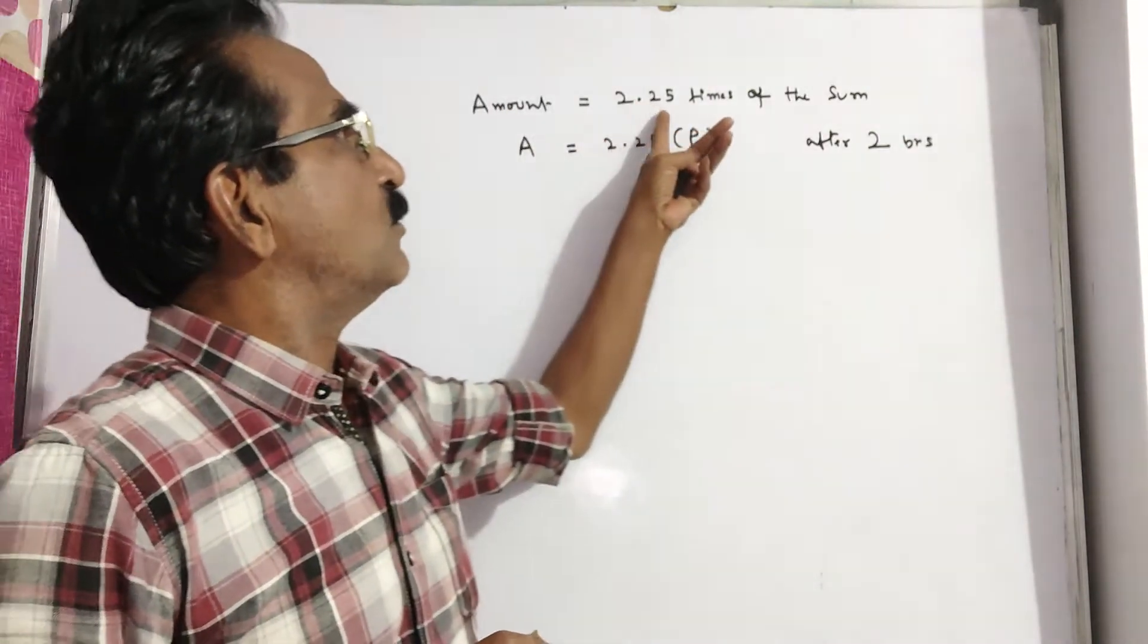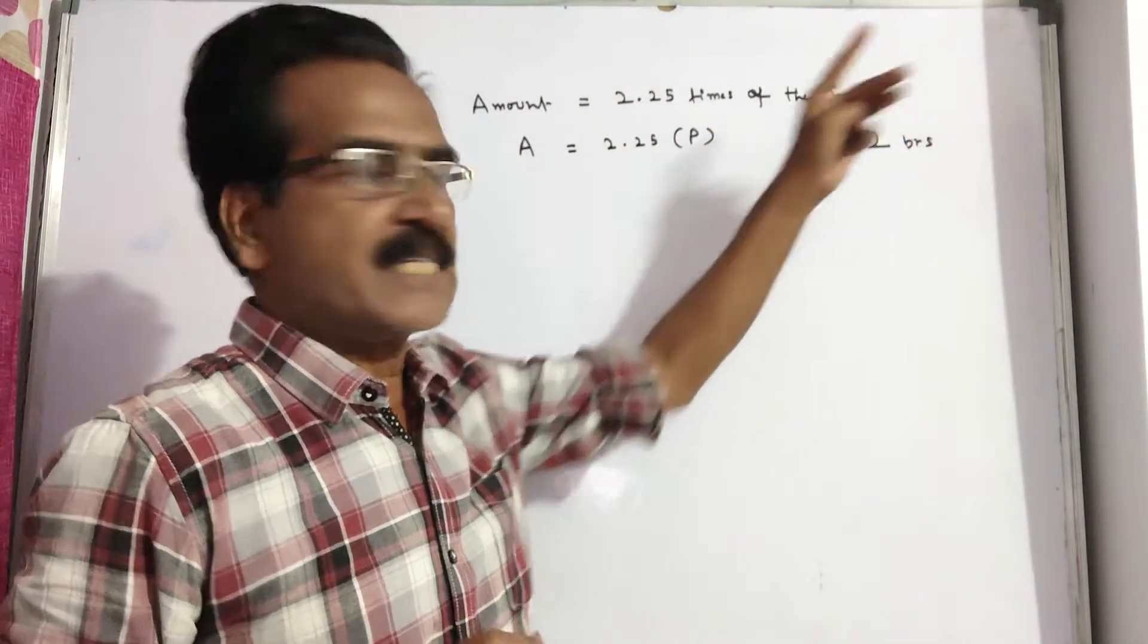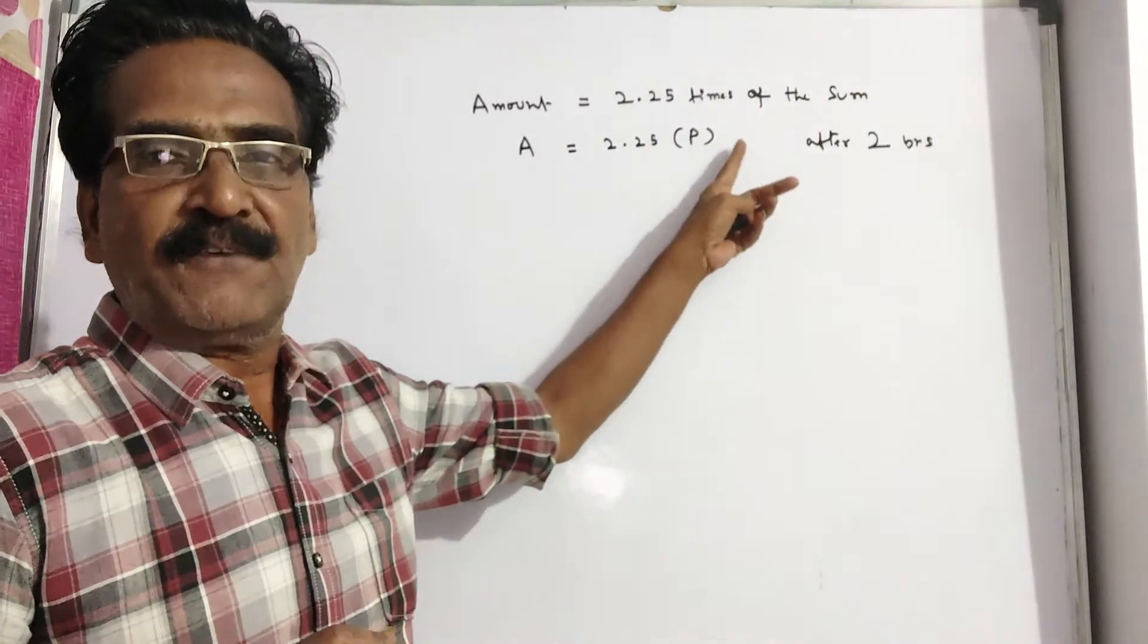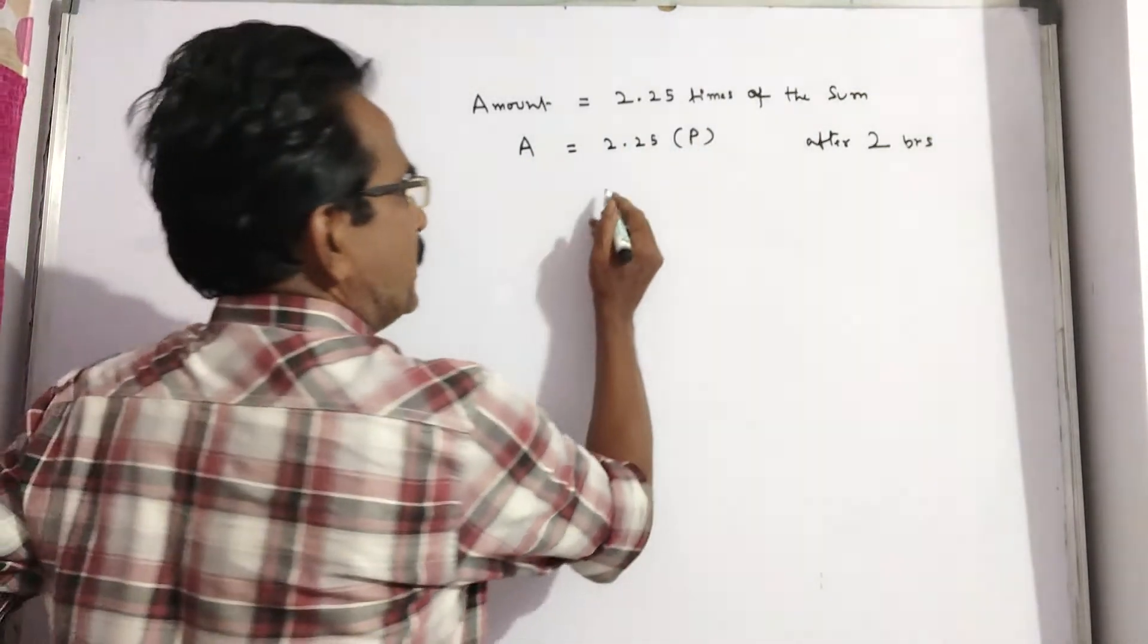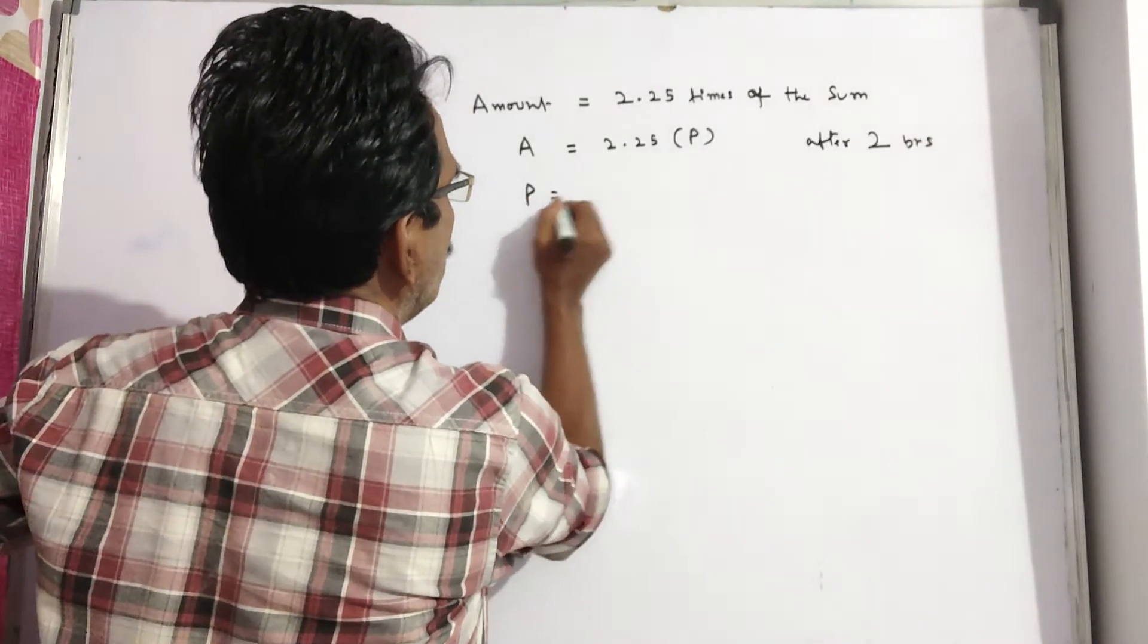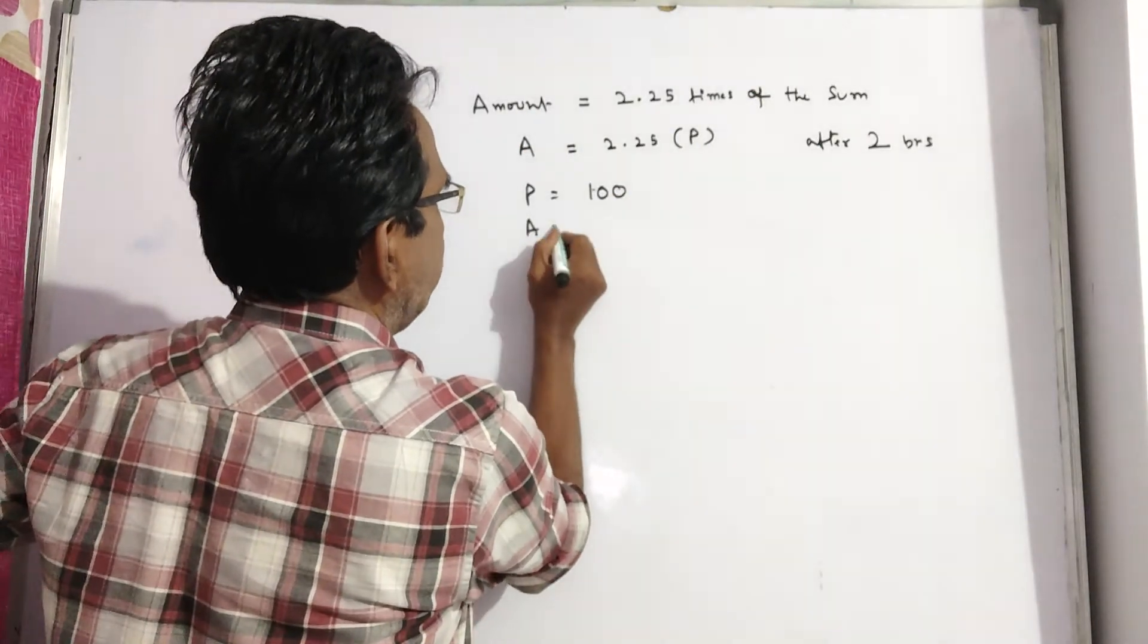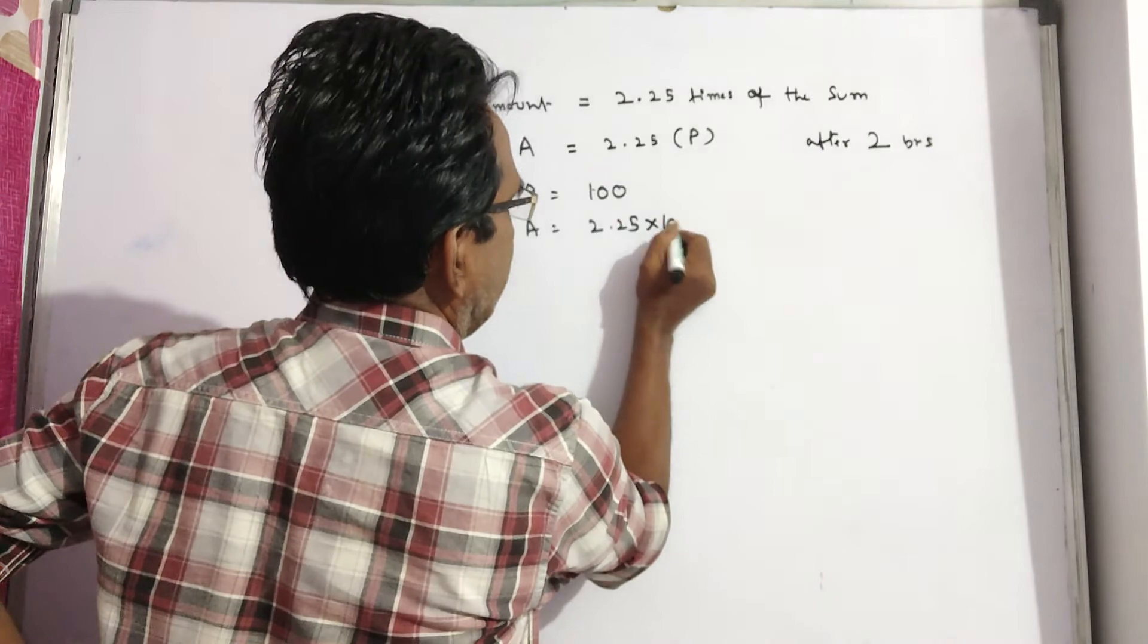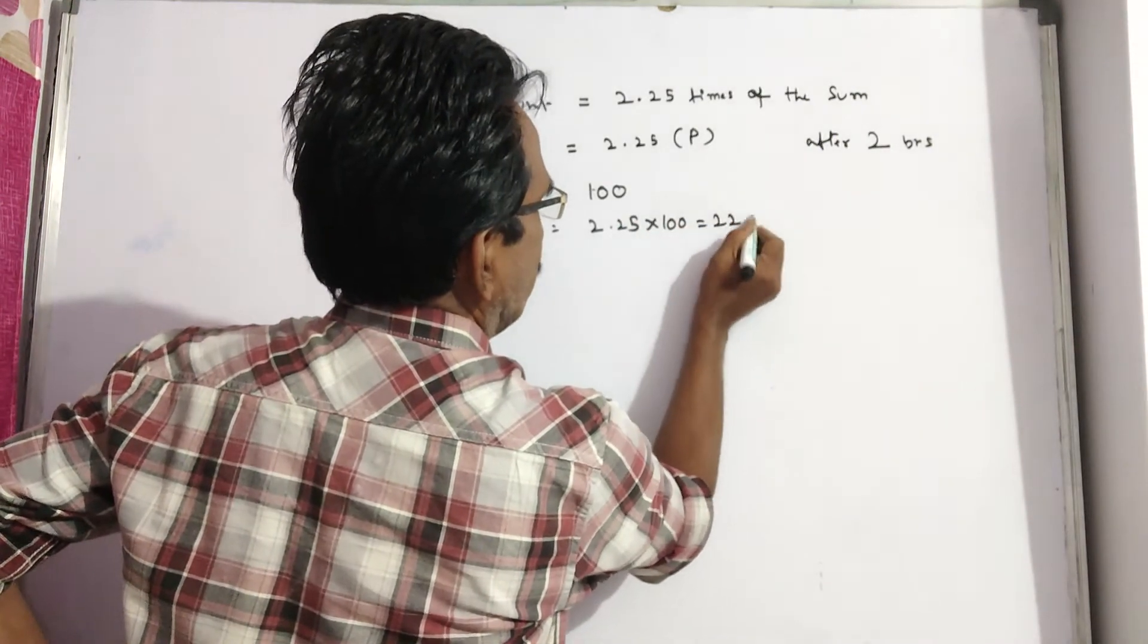Amount is equal to 2.25 times of the sum. That implies A equals 2.25 times P. Now, let us say P equals 100. Then A becomes 2.25 into 100, that is equal to 225.